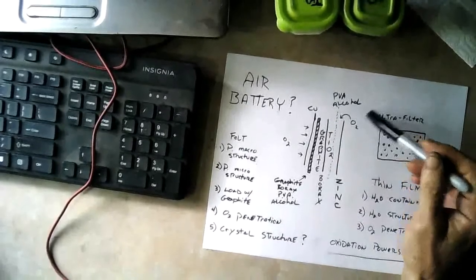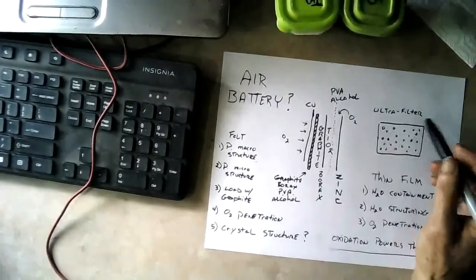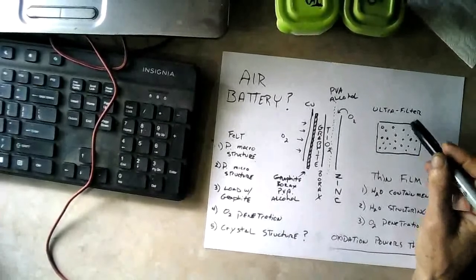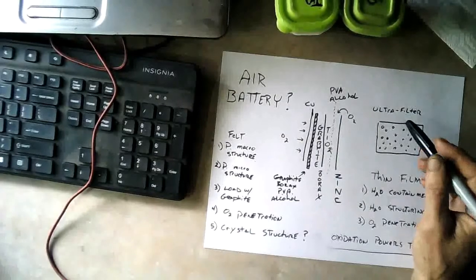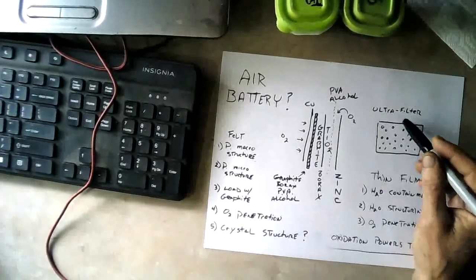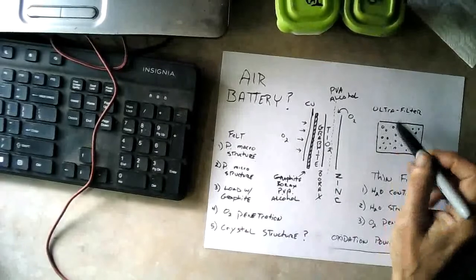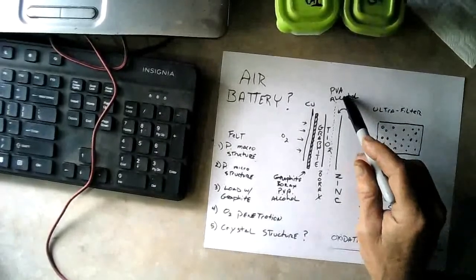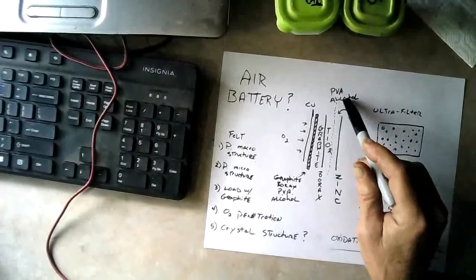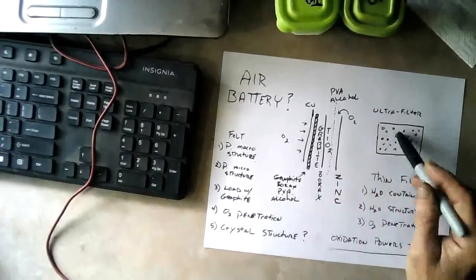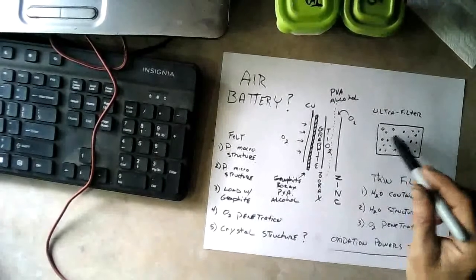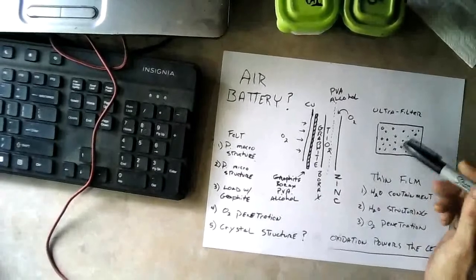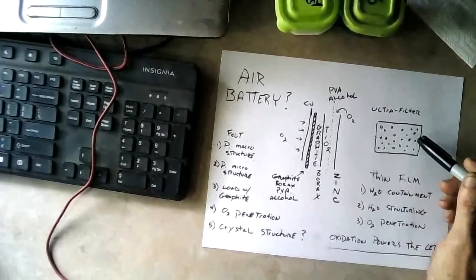It has to do with oxygen penetration. When they make an air filter, they take a polymer and mix it with a volatile solvent that evaporates at a lower temperature. That's basically what we've got here - our PVA polymer with an alcohol solvent that evaporates at low temperature. When it evaporates out of the polymer, it leaves little pores in there.